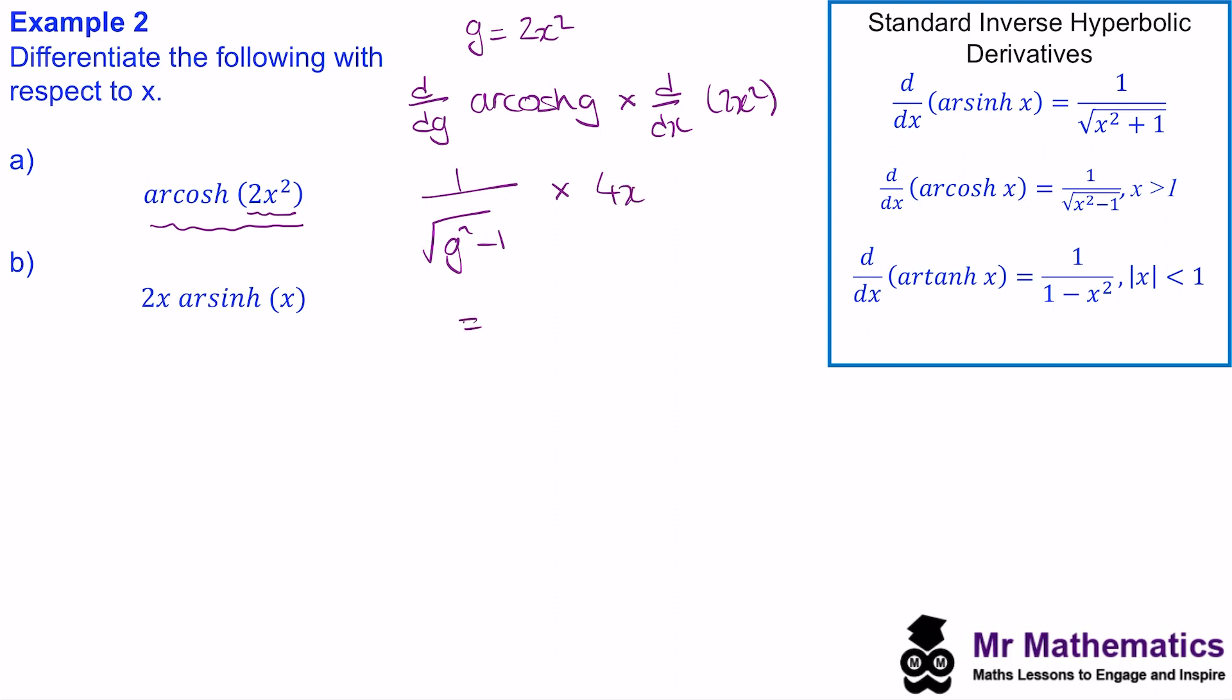And we can write this as a single fraction as 4x over the square root of g squared minus 1. But now we need to substitute g back into here. And if g is equal to 2x squared, then g squared will equal 4x to the 4. So now we have the derivative as 4x over the square root of 4x to the 4 minus 1. So this is the gradient function of this expression here.